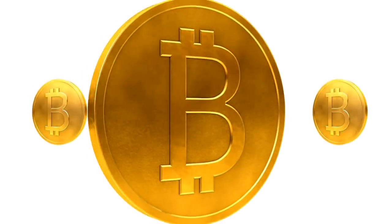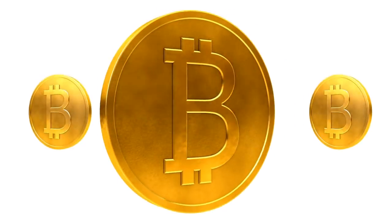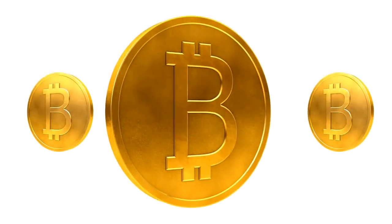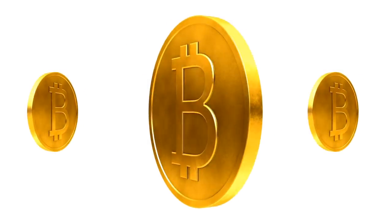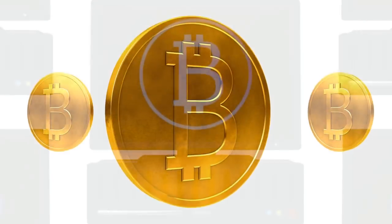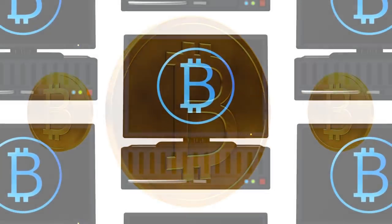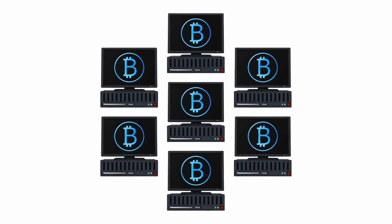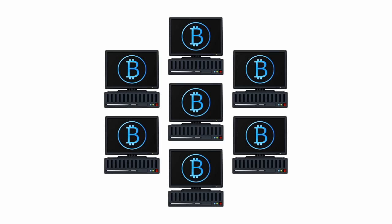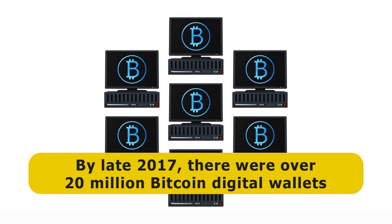Blockchain was invented in 2008 as the technology behind Bitcoin. Today, an increasing number of blockchain applications have nothing to do with Bitcoin or any other digital currency. That said, an explanation of Bitcoin provides a straightforward example of blockchain in operation. All Bitcoin transactions are recorded in a public blockchain that is very widely distributed across a great many computers. The blockchain keeps track of the Bitcoin stored in over 20 million digital wallets and is updated about every 10 minutes.